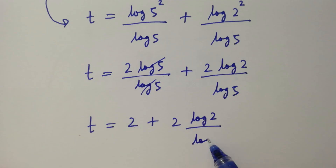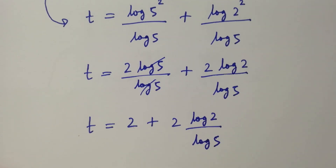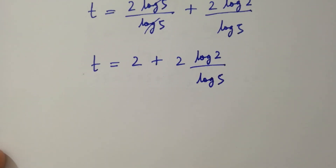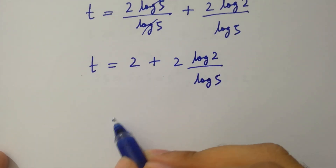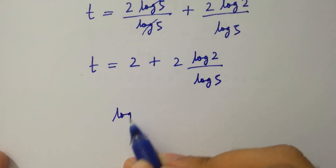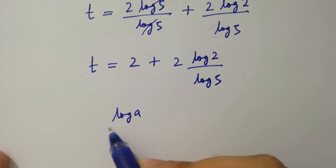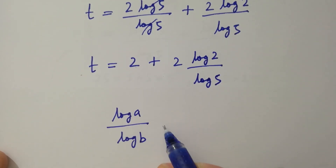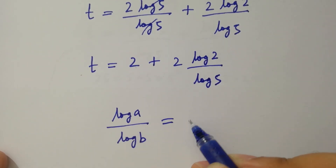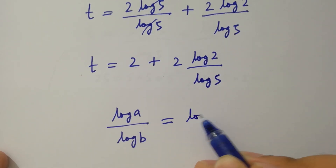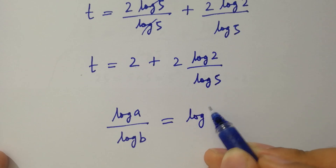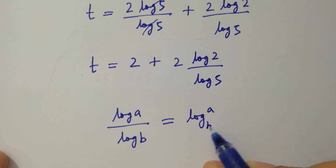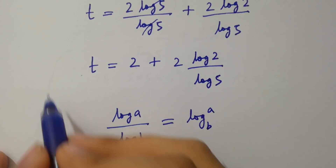Since log a over log b equals log a to the base b, we get t equals 2 plus 2 log 2 to the base 5.